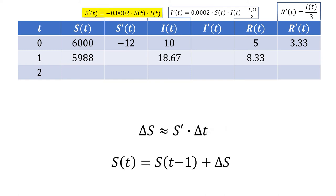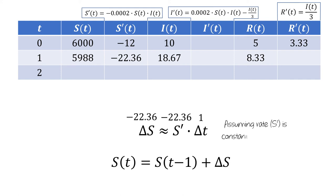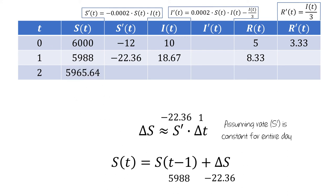Now we can repeat the whole process to compute the number of people in each group at t equals 2. We'll compute S'(1) using the differential equation — we'll multiply S(1) by I(1) by negative 0.0002 to get negative 22.36 people per day for S'. We're going from one to two days, so delta t is one day. The rate at t=1 is negative 22.36 people per day, so delta S is approximately negative 22.36. This is approximate because we're assuming the rate S' is constant for the entire day. Using delta S along with S(1), there are 5,965.64 susceptible individuals at t equals 2.